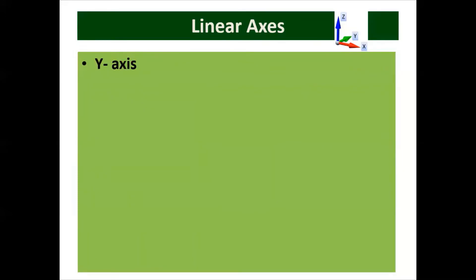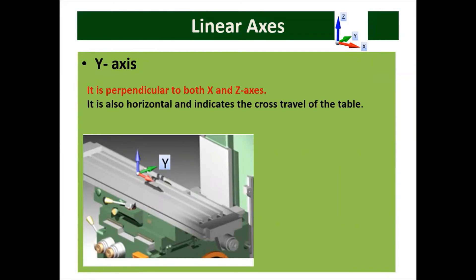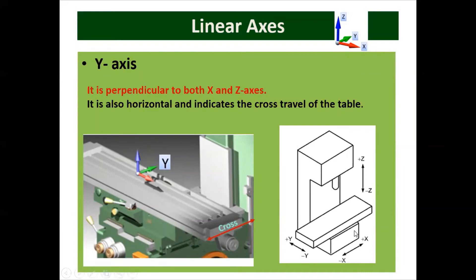Next is the Y axis. Since we have already considered the X and Z axes, the third axis added is always perpendicular to X and Z. The Y axis is always perpendicular to both X and Z axes, as seen in the diagram. It is also horizontal and indicates the cross travel of the table. When the table is moved towards the column, we consider that as positive Y, and if it is moving towards the operator, we consider that as negative Y axis.